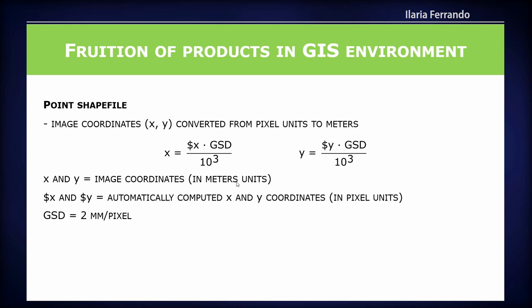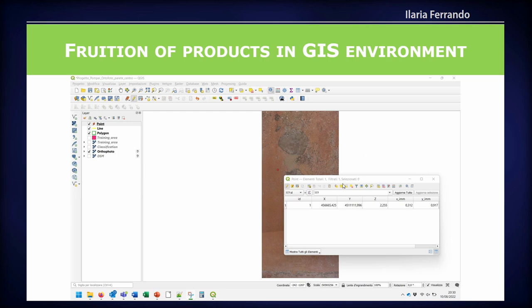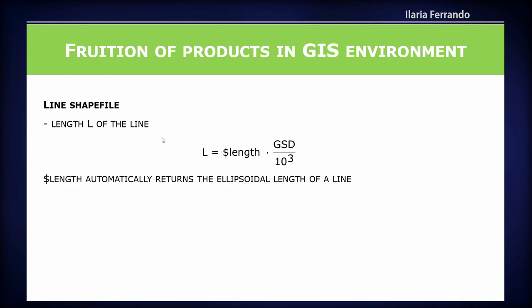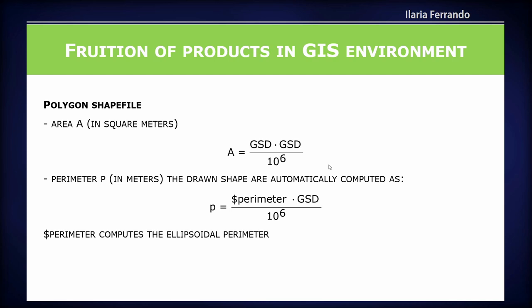The attribute table is updated to provide both the image coordinates of the shape file and the real-world coordinates — specifically the ETRF UTM 33 X, Y, and Z of the clicked point on the orthophoto through the defined relation, detailed in the paper. The same applies for the line shape files, where lengths are computed automatically, and for the polygon shape files, where area and perimeter are computed automatically.